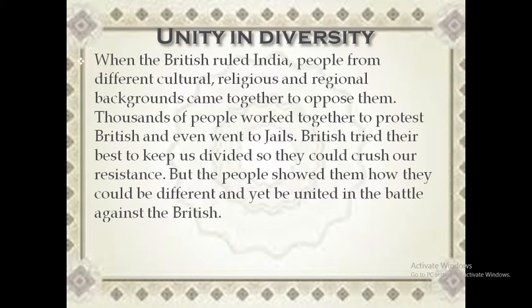The British noticed that among Brahmins there were different types, and the same was true for Kshatriyas and Shudras. The British took advantage of this. They captured one state, then noticed differences between two states, made them fight each other, and then captured them too. With many such strategies, they captured the whole country.